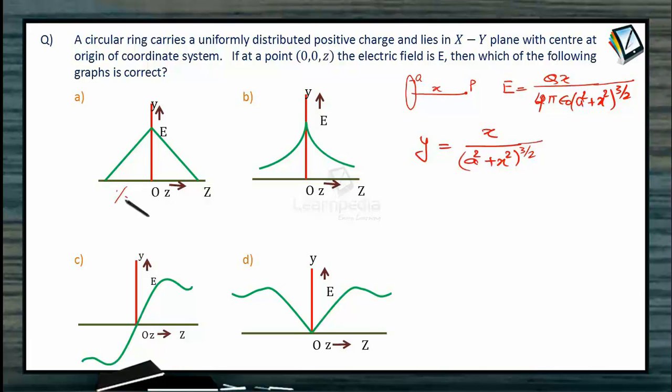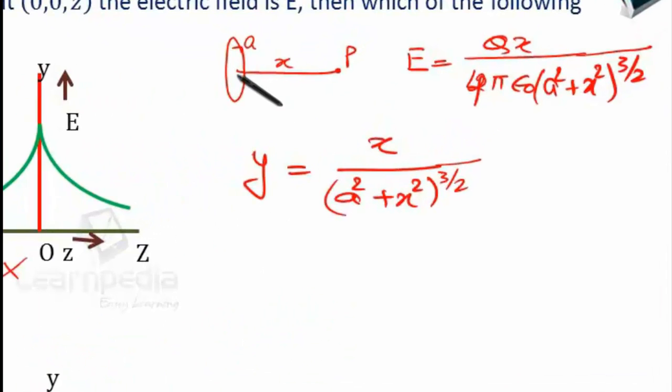So this option is not going to be there, this option is not going to be there, only these are the two options which are left. Just by logic here, we can get the answer without any calculation also, because as we know that since ring is positively charged, if we look to the right of the ring, then direction of electric field is this way,